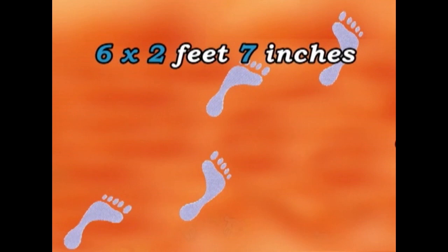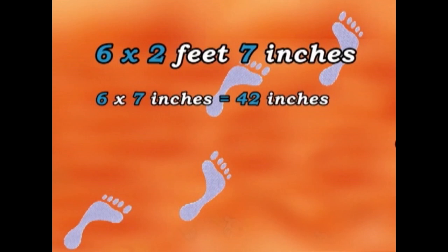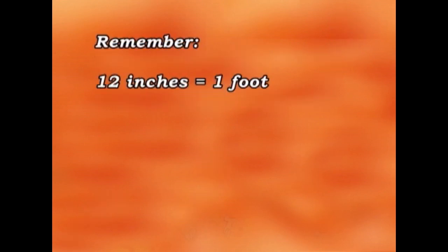Let's take the inches first. Six times seven inches. Six times seven, that's forty-two inches. Remember, twelve inches make a foot, so forty-two inches divided by twelve, that gives us three feet six inches.